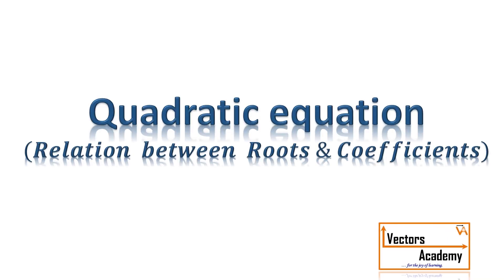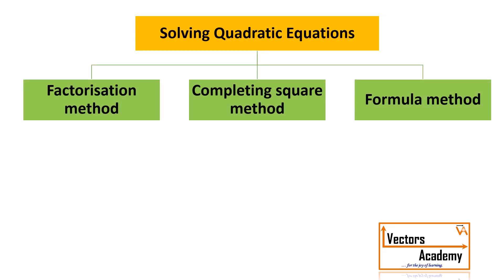Today we will study the relation between the roots of a quadratic equation and its coefficients. So far, to solve a quadratic equation, you have studied three methods: the factorization method, completing square method, and the formula method. By any of these methods, you usually get two different answers, or sometimes you get one answer twice. So without actually solving the equations, how do we find out whether the equation has two different roots or the same roots?